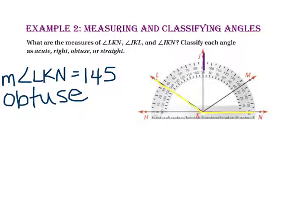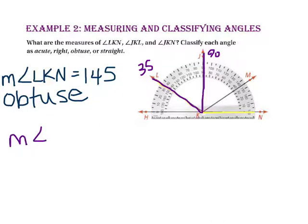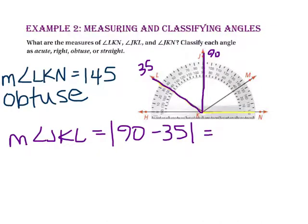Looking at angle JKL, ray KJ goes through 90 degrees on the inside and outside ring of the protractor. Ray KL crosses through 145 on the inside ring and 35 on the outside ring — let's use the smaller numbers. Since neither ray points to 0, we use the absolute value of the difference: the measure of angle JKL equals the absolute value of 90 minus 35, which is 55. Since 55 is between 0 and 90 degrees, angle JKL is acute.